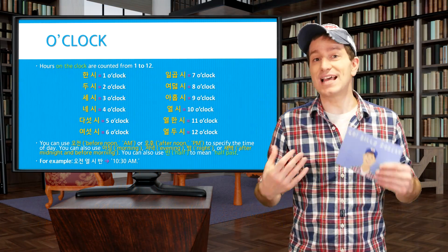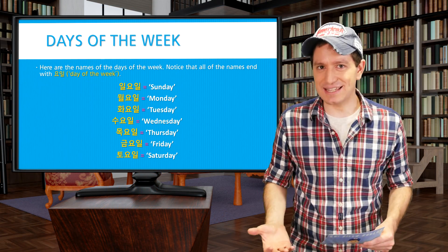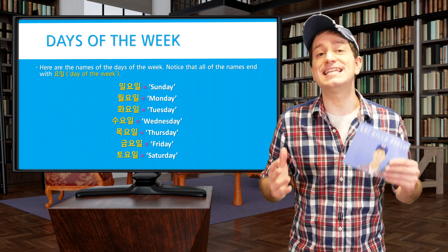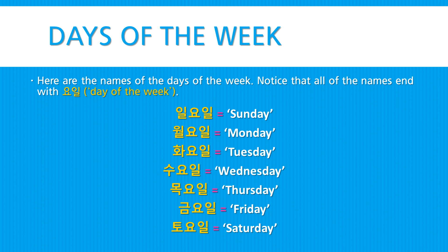Now let's learn how to say the days of the week. Notice that all of these end with 요일, which means 'day of the week': Sunday 일요일, Monday 월요일, Tuesday 화요일, Wednesday 수요일, Thursday 목요일, Friday 금요일, Saturday 토요일.